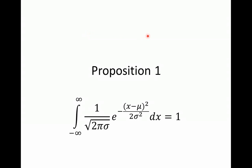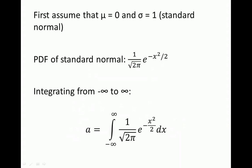In this video I will talk about the probability density function of a normal variable and we will show that if we integrate from negative infinity to infinity it will equal 1. This is our probability density function of a normal random variable, and we want to show that the integral from negative infinity to infinity over x equals 1. We know this should hold because if we sum all the probabilities, the total should equal 1 — otherwise it can't be a probability density function.